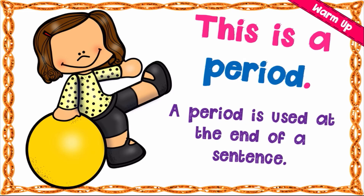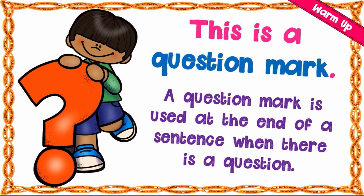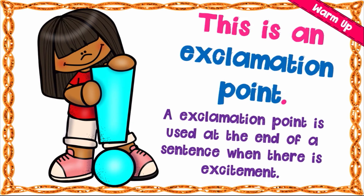A period mark, which we usually call a full stop, is used at the end of a sentence without a question. A question mark is used at the end of a sentence when there is a question. This is what we call the exclamation mark. An exclamation mark is used at the end of a sentence when there is excitement — that excitement could be fear, happiness, or being scared — it is a general statement of excitement.